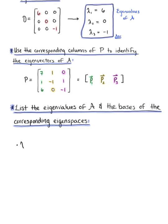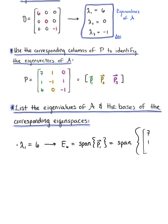Our first eigenvalue is λ₁ = 6, which corresponds to eigenspace E₆, defined as the span of the first eigenvector p₁. This is the span of the vector (7, 1, 6).